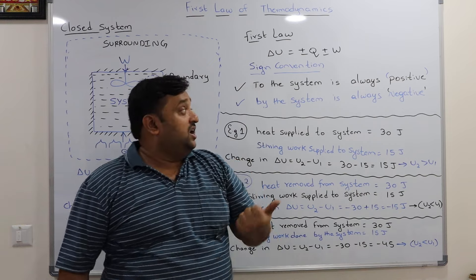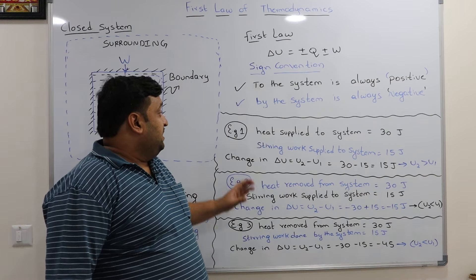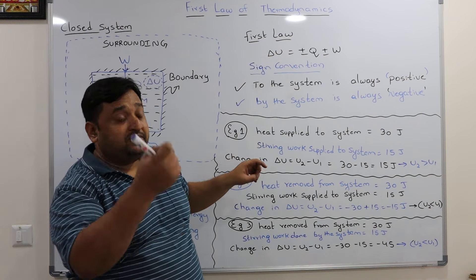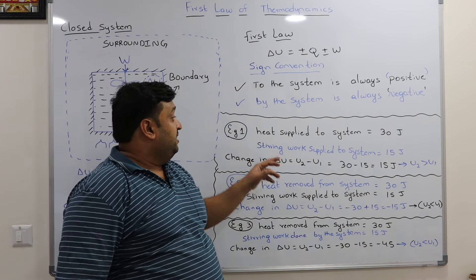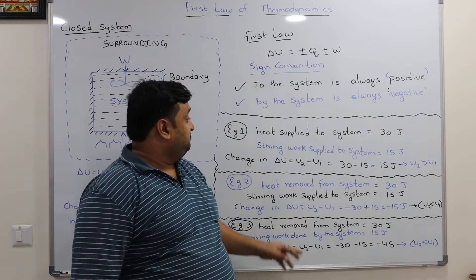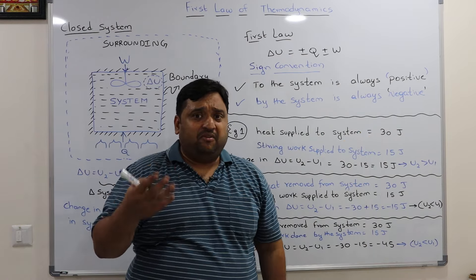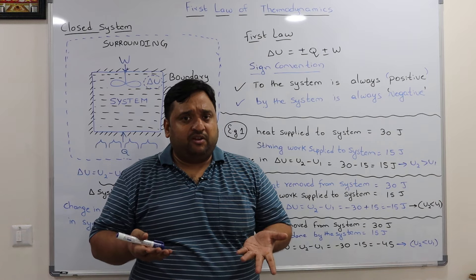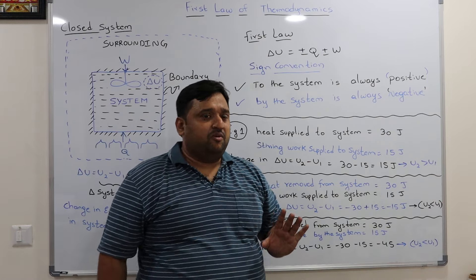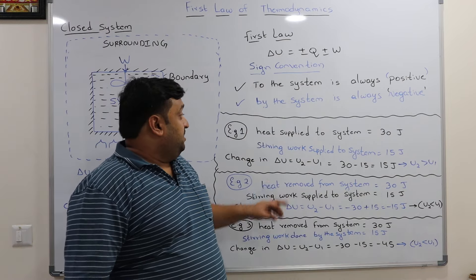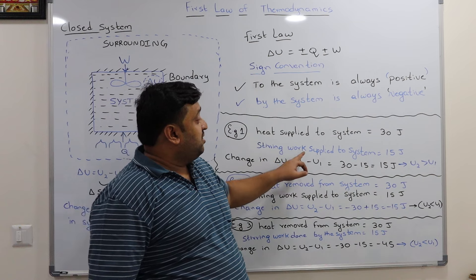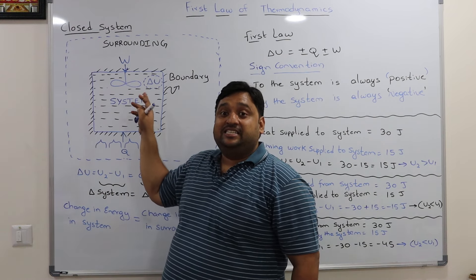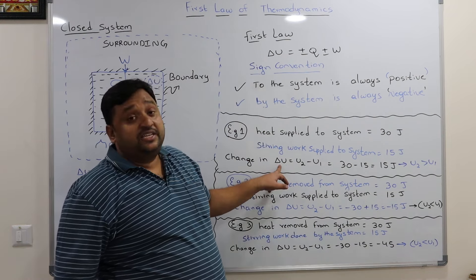Let us do a simple example to clarify things. Example one: applying the first law of thermodynamics for a closed system. The problem is as follows — there is a system, heat supplied to the system is 30 joules, and stirring work supplied to the system is 15 joules. Work can take many forms — displacement work, flow work, stirring work — but here we concentrate on stirring work. Now use the first law to calculate the change in internal energy.